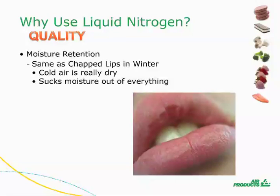Moisture retention is an important quality aspect for all food items. You want your cake to be moist, your chicken to be juicy, and your vegetables to be moist. Loss of moisture robs your food of their quality properties. Dehydration of food occurs because cold air is very dry. This is exactly why you get chapped lips in the winter — the air is really dry and the moisture in your lips evaporates more quickly than in the humid summer air. This is the same process that happens when freezing food; the cold and dry air in the freezer causes the food to dehydrate.